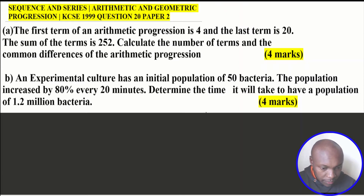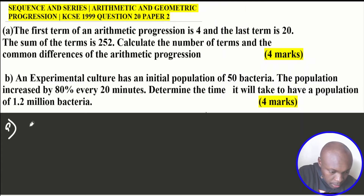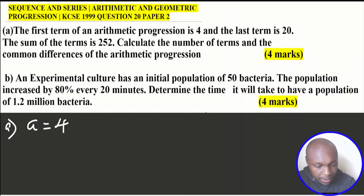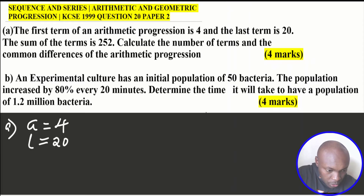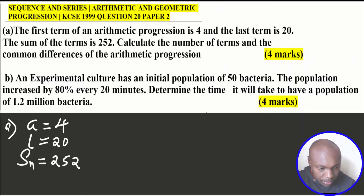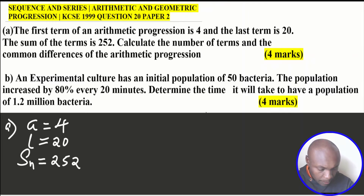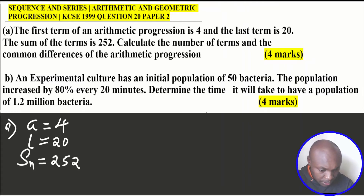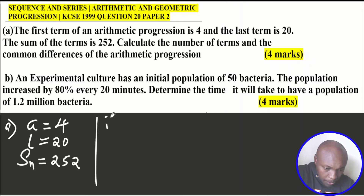For Part A, the given values are: first term a = 4, last term l = 20, and sum of terms SN = 252. We need to calculate the number of terms and the common difference. There are two formulas used to calculate the sum of a number of terms of any arithmetic progression.